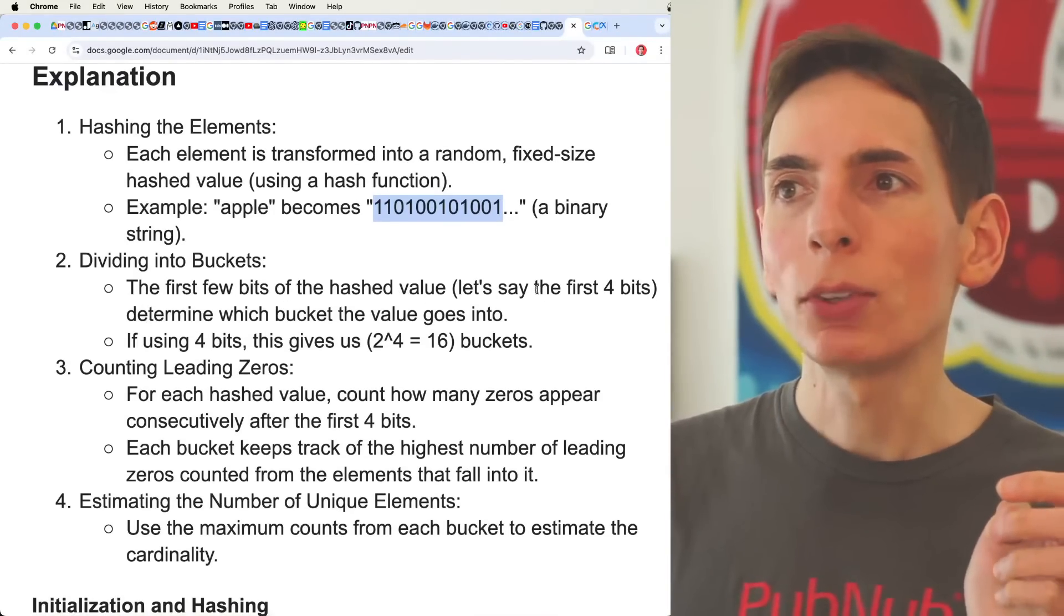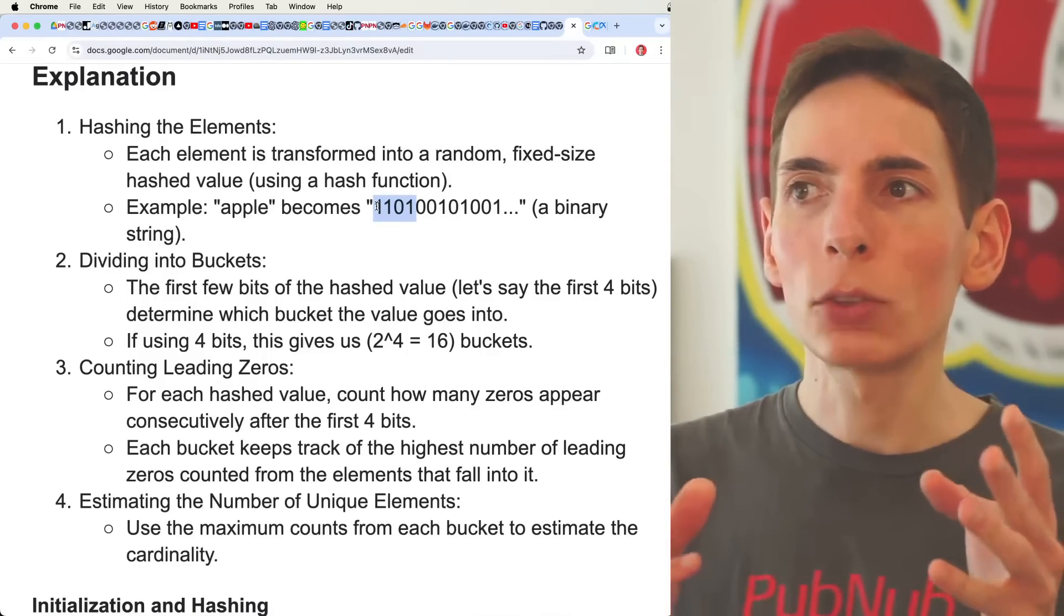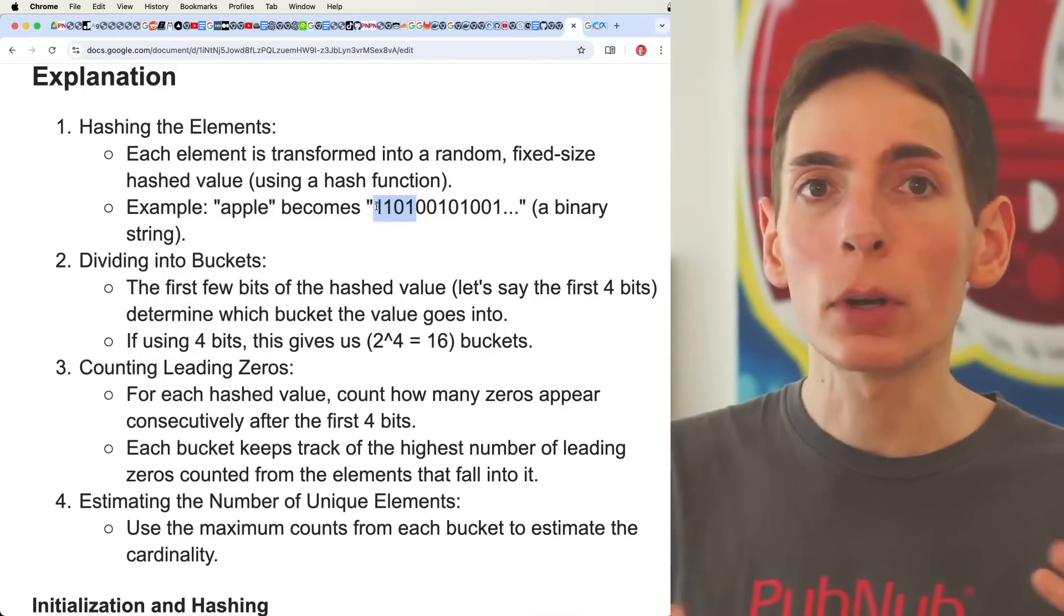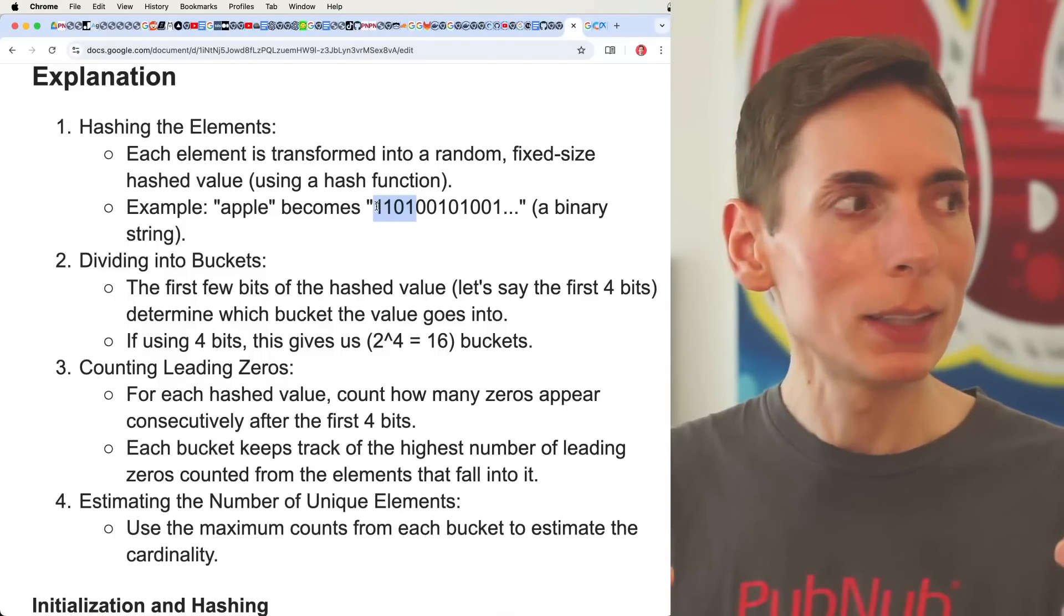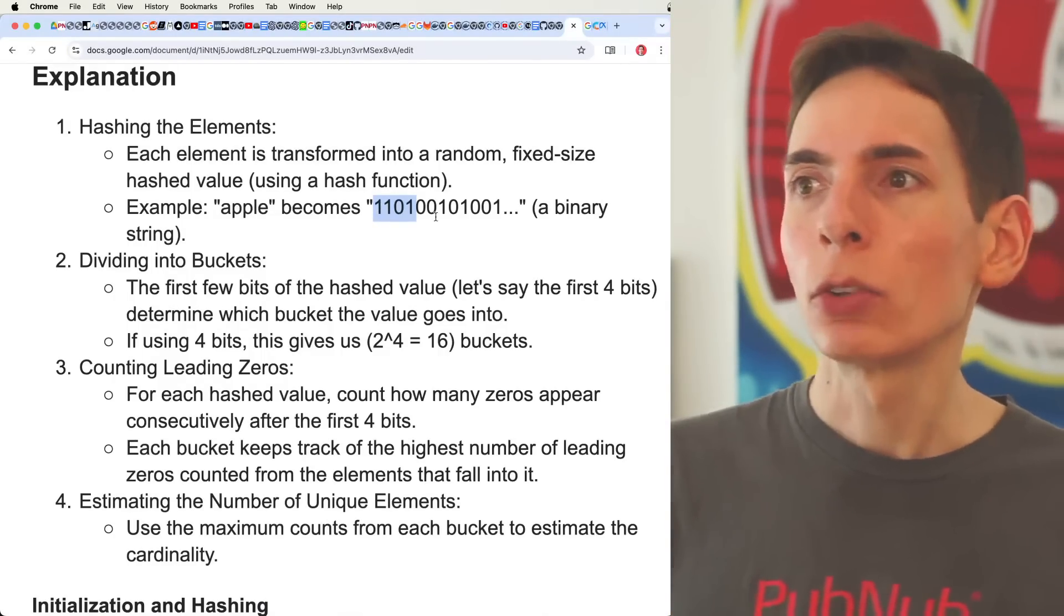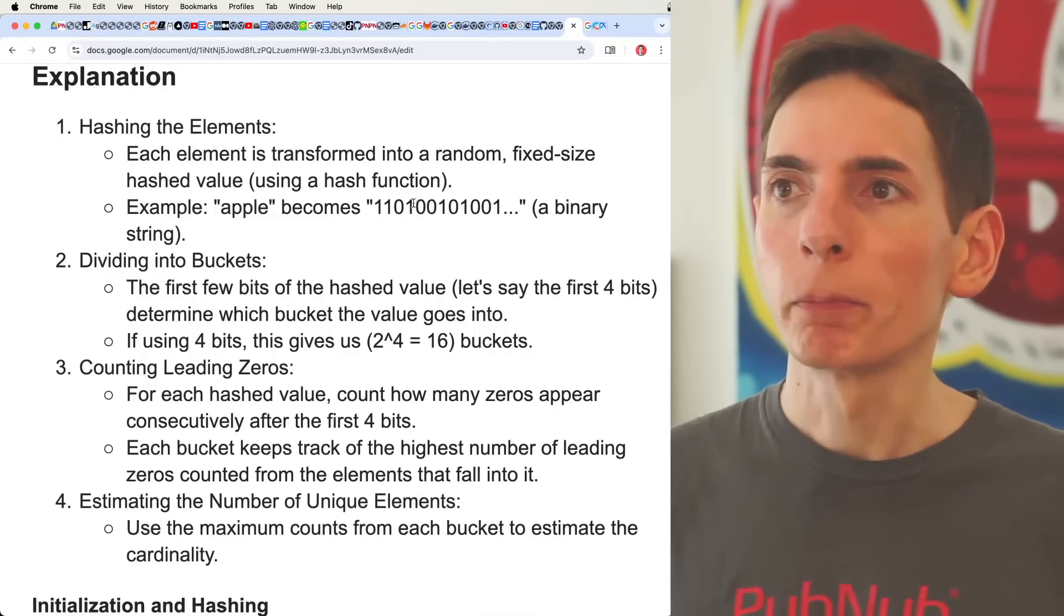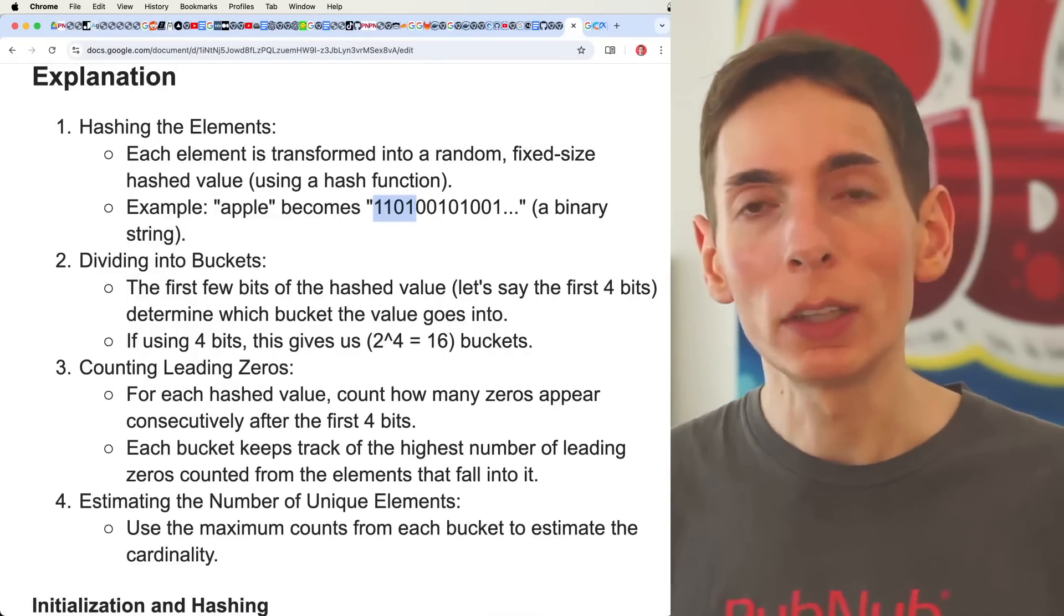And then we divide into buckets. We say the first four digits, this will be the number of buckets or the position, the length of the array, how many elements in the array. So four bits would actually allow us to have 16 elements in the array.